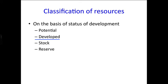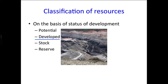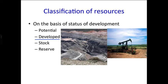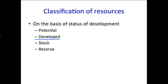The next classification is developed resources — resources that have been surveyed and whose quality and quantity have been determined for utilization. Their development depends on the technology and level of feasibility. Examples include coal mines and oil wells.